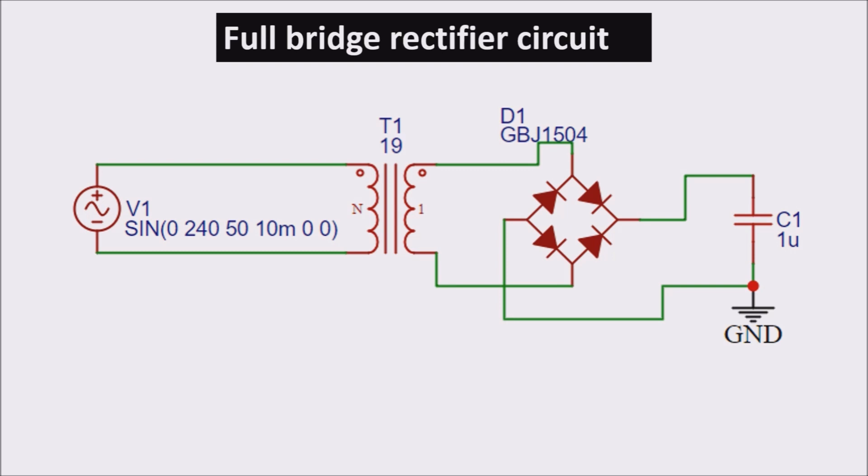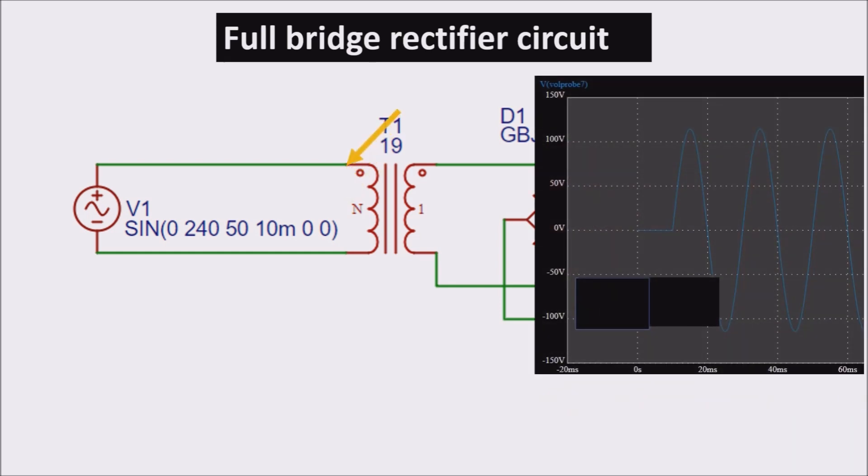Now let's simulate this circuit in the EZ-IDA electronic simulator, just to check the working. Here you can see the circuit with N1-N2 ratio of 19. We apply a sinusoidal wave of 50 Hertz and 240 volts peak, similar to the AC voltage in our houses.